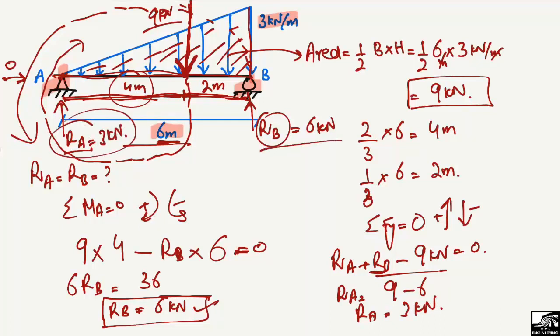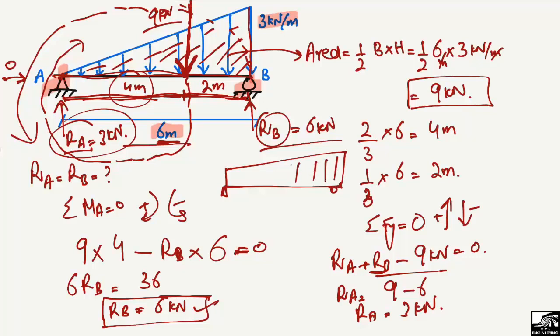So we found RA equals 3 kilonewton and RB equals 6 kilonewton. This is the method for finding support reactions for a non-uniformly distributed load. Similarly, if there is a trapezoidal load acting on the beam, you can find the area of the trapezoid and then find the support reactions using the same equilibrium equations. Hope you understood — don't forget to subscribe to our channel. Thank you for watching.